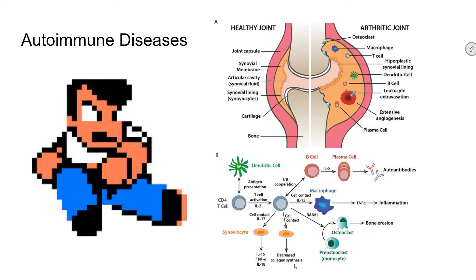Graves' disease is another autoimmune disease. It causes hyperthyroidism, where your thyroid works overtime and is no longer able to control itself. Type 1 diabetes is another one, where there's an autoimmune response against your pancreatic cells and the body decides that those should no longer be there. So again, this is not a normal thing — the immune system is working, it's just working against the wrong things. It's attacking itself.